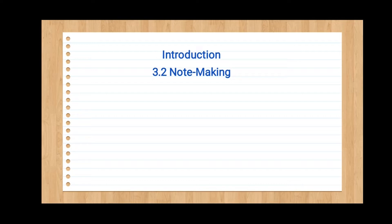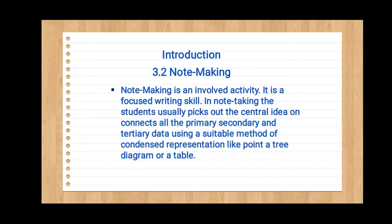From topic 3.2, note-making is an involved activity. It is a focused writing skill. In note-taking, students usually pick out the central idea and contents — all the primary, secondary, and tertiary data — using a suitable method of condensed representation like a point, a tree diagram, or a table. In note-making, we take out some points and from those points we make a tree diagram.